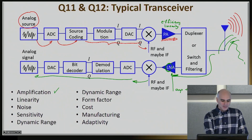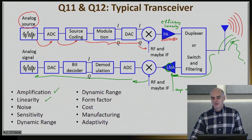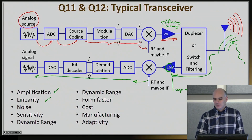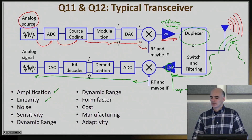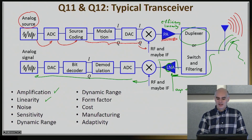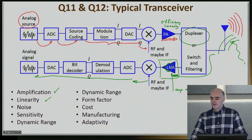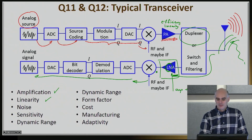We have to worry about linearity throughout the system. For example, your PA has to be linear, but your filter has to be linear too — it doesn't make sense to worry too much about the PA being linear when the filter will actually destroy everything. Similarly, the LNA must be linear as well; otherwise, the signal you're trying to receive is not going to look the same at its output as it was at its input.